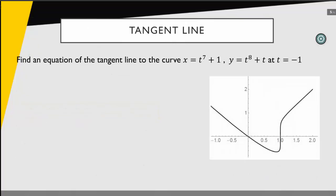Alright, so we want to find the equation of the tangent line to this specific curve. We have x equals t to the 7th plus 1, y equals t to the 8th plus t, at the specific point where t is equal to negative 1.